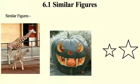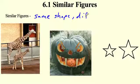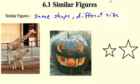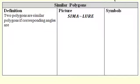They are the same shape. If they were congruent, congruent means same shape, same size. Similar means same shape, different size. So we take that shape, make it a different size, but keep the shape the same — that's similar. Here's a little star, the same exact star just made bigger. Same thing with the giraffe.